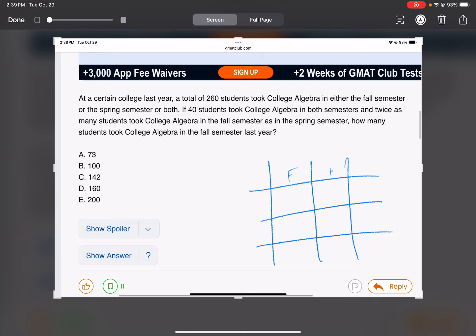Okay, we're going to do took algebra in the fall, didn't take it in the fall, took it in the spring, did not take it in the spring. A total of 260 took college algebra in either the fall or spring or both. That means the total we work with is 260.